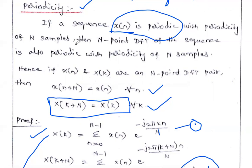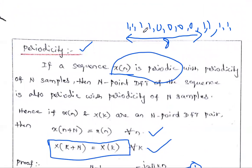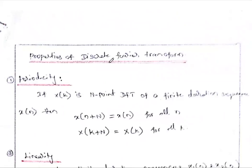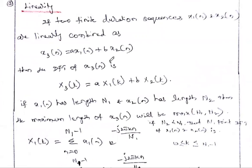Using this property, we can also solve some problems. If you see a given sequence, identify whether X(n) is either periodic or non-periodic. If it is periodic, we may use this periodicity property to find the DFT value. This is the first property of DFT. The next property is the linearity property. This is a very simple property that we have studied in all transforms.